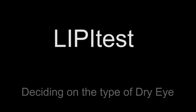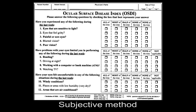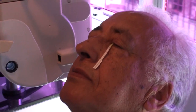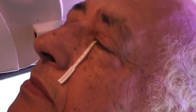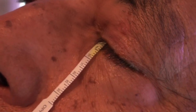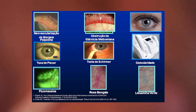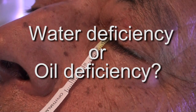Part 3: Deciding on the type of dry eye. OSDI is an excellent subjective method to evaluate the symptoms of dry eye patients. With good sensitivity, it can separate normal eyes from dry eyes. But tests such as breakup time, Schirmer tests, corneal staining, and even osmolarity alone do not define what type of dry eye we are facing — whether water deficiency type or evaporative by lipid deficiency.